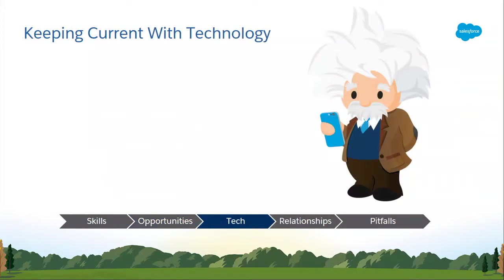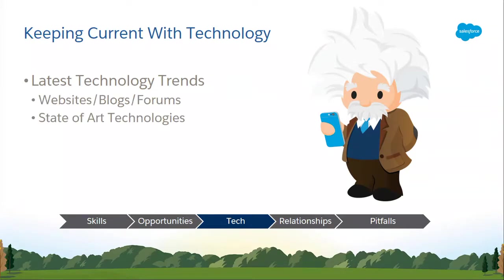The third most important skill as a technology leader is to keep up with current technology. We work with a lot of technologies and people around us, so we learn a lot from our experts and also from online resources such as websites, blogs, and forums. Given how fast technology changes, it becomes very important for you to select the best possible technology available in the market to meet your organization's needs. By staying current, you will avoid building costly in-house solutions and instead benefit from state-of-the-art technologies and ideas available in the market.